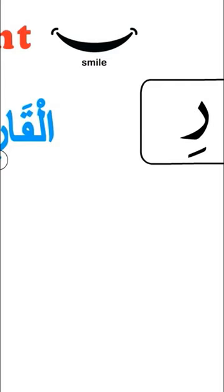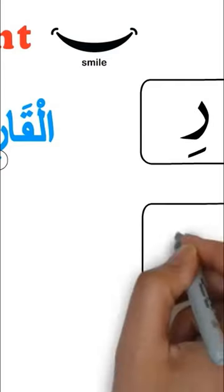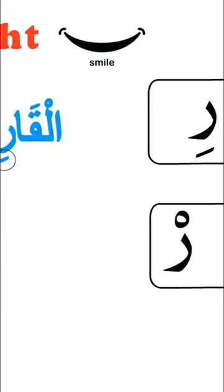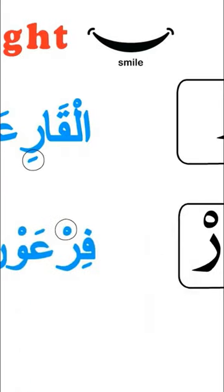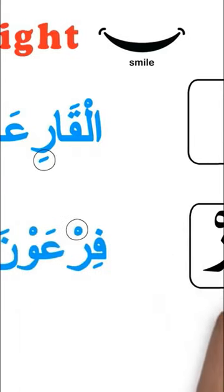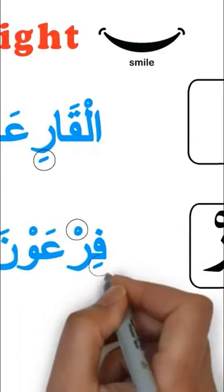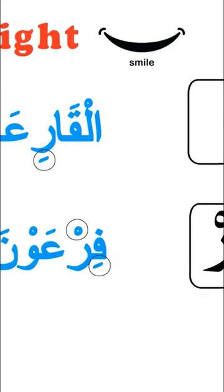If the Ra has a Sukun, we look at the letter before it. If it has a Kasra in the same word, it will also be pronounced light. It reads as Fir'aun with a light Ra.